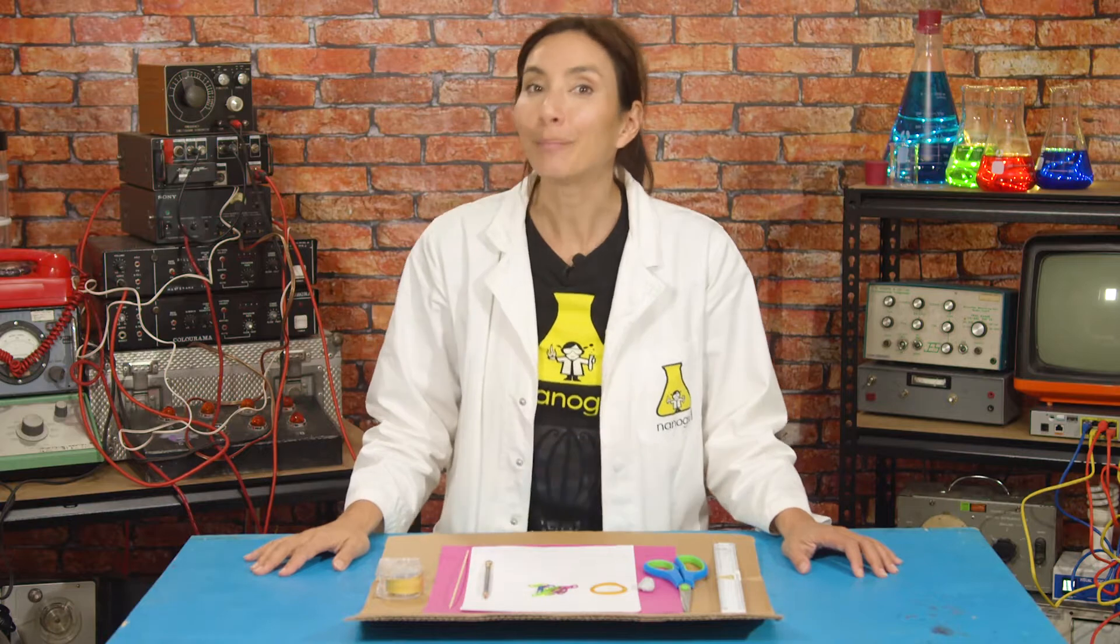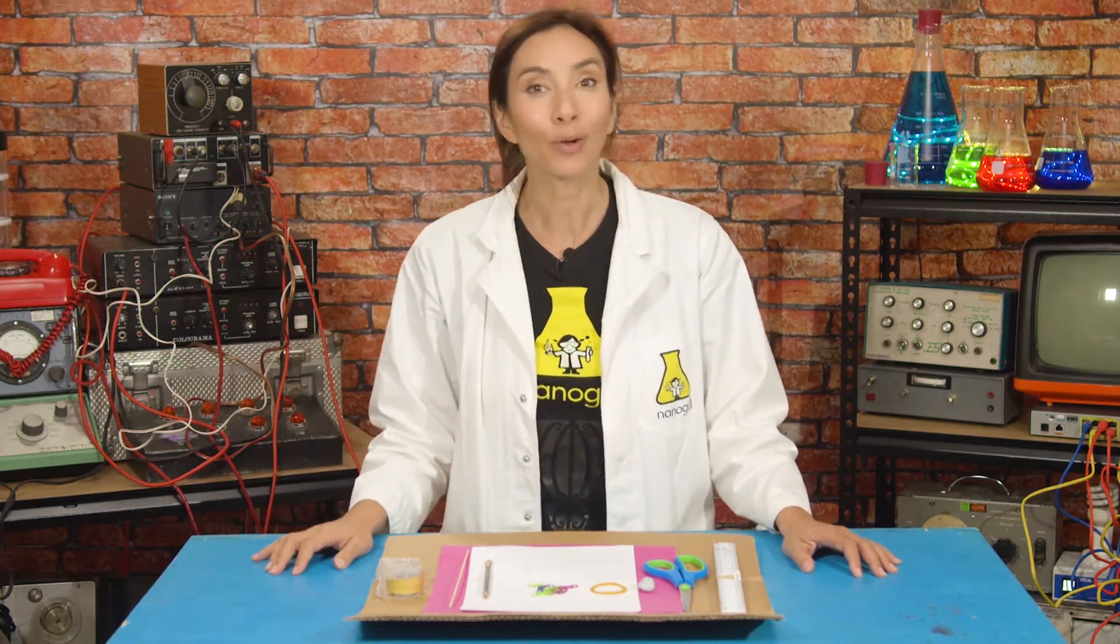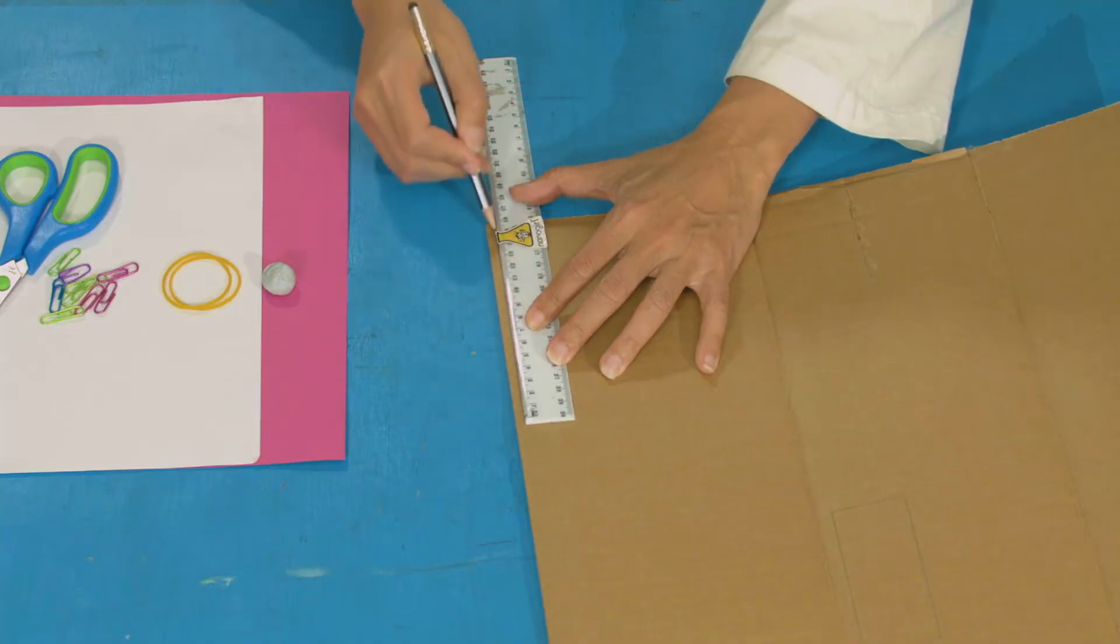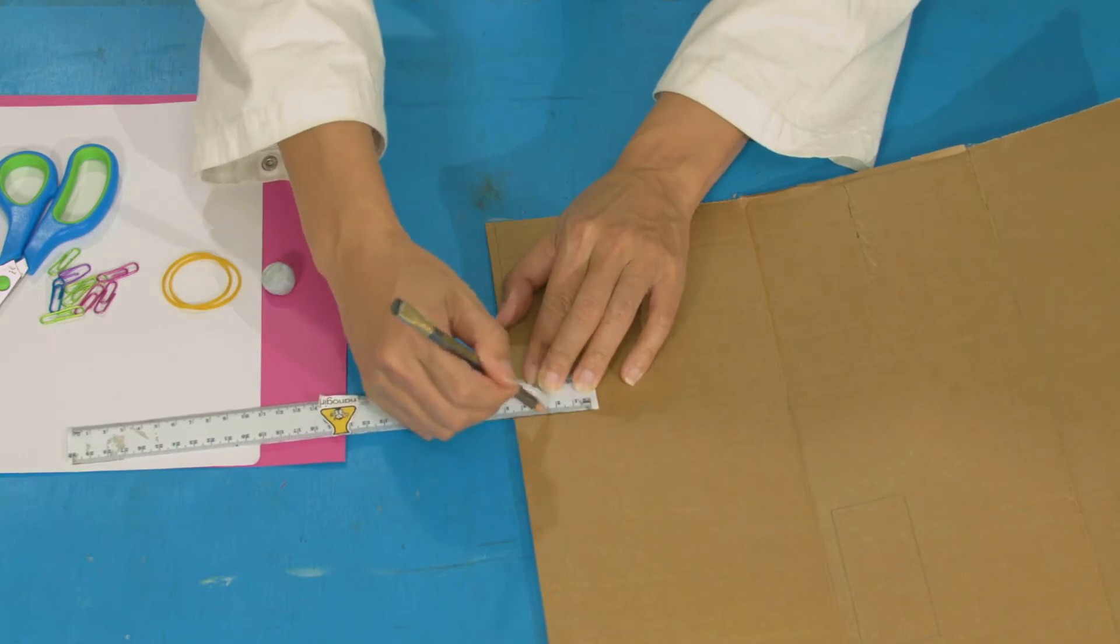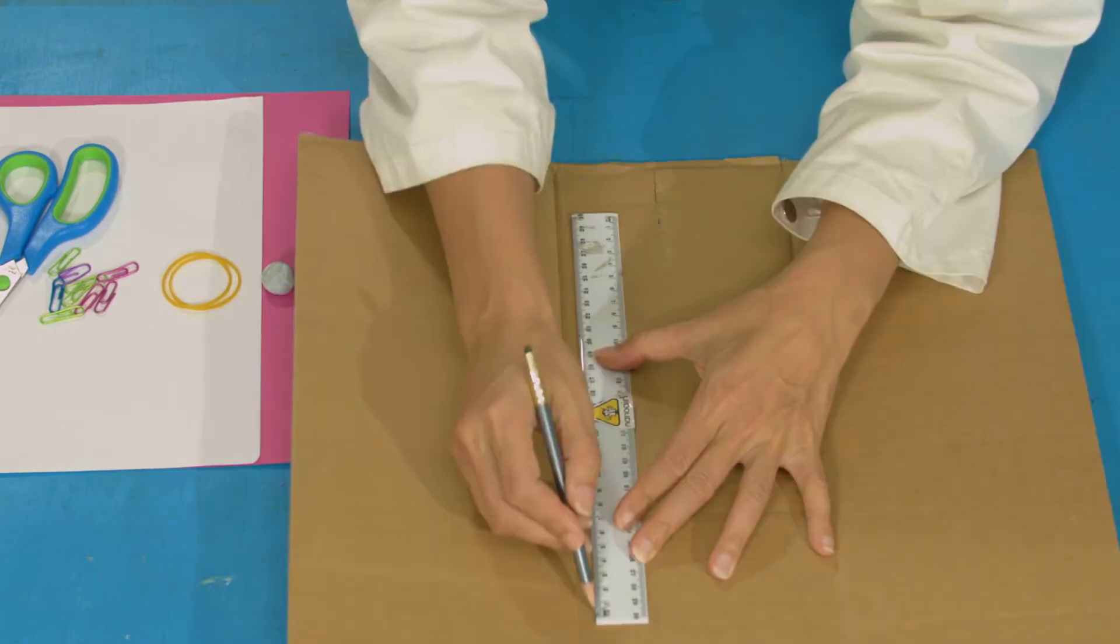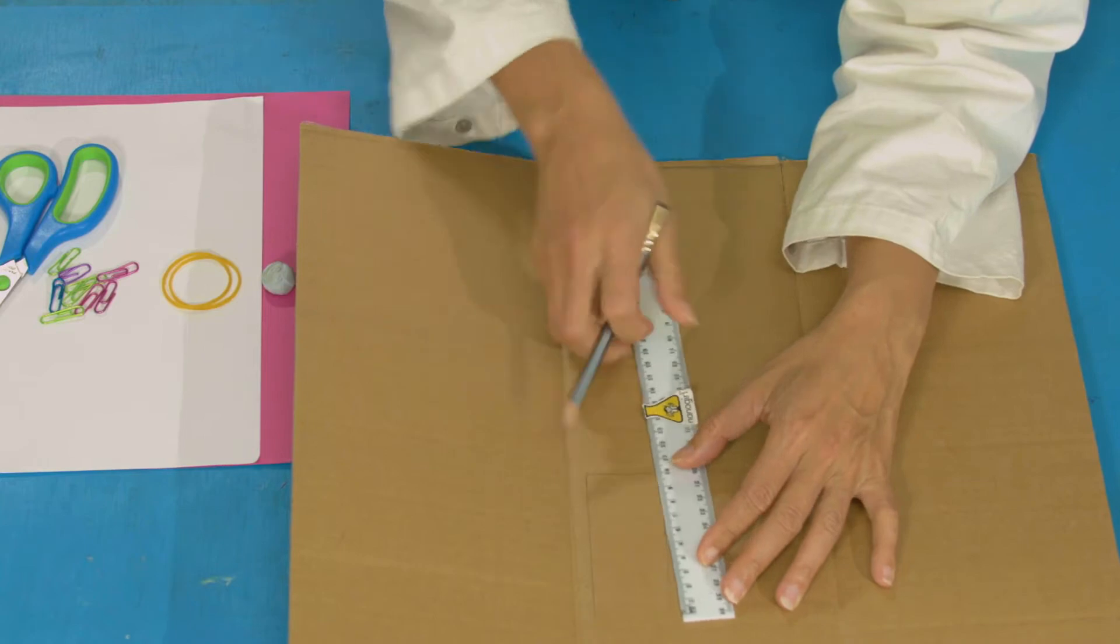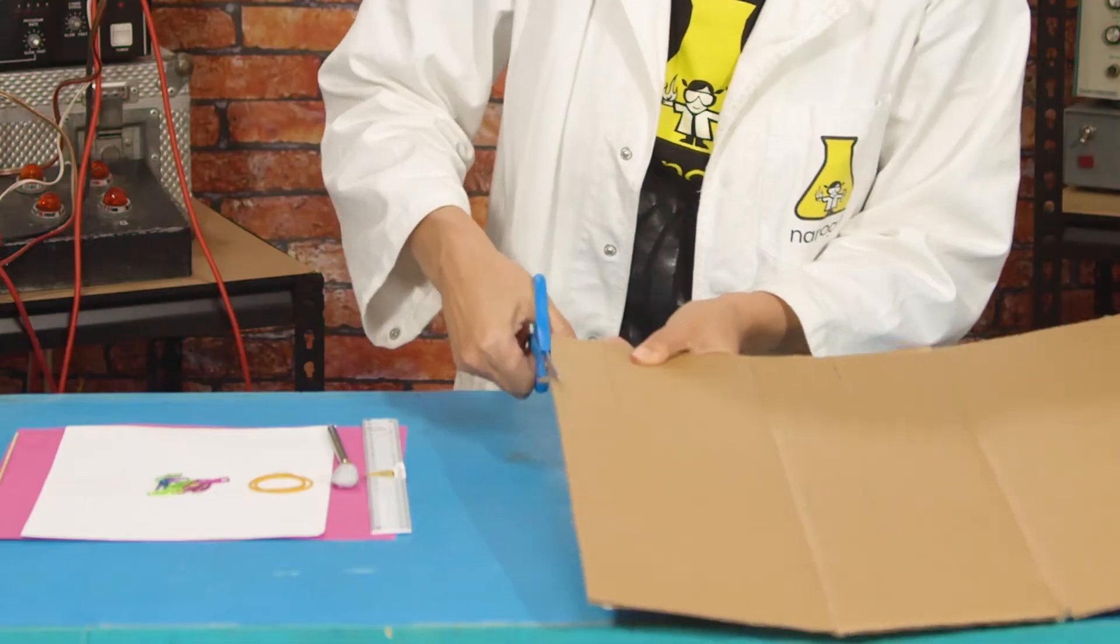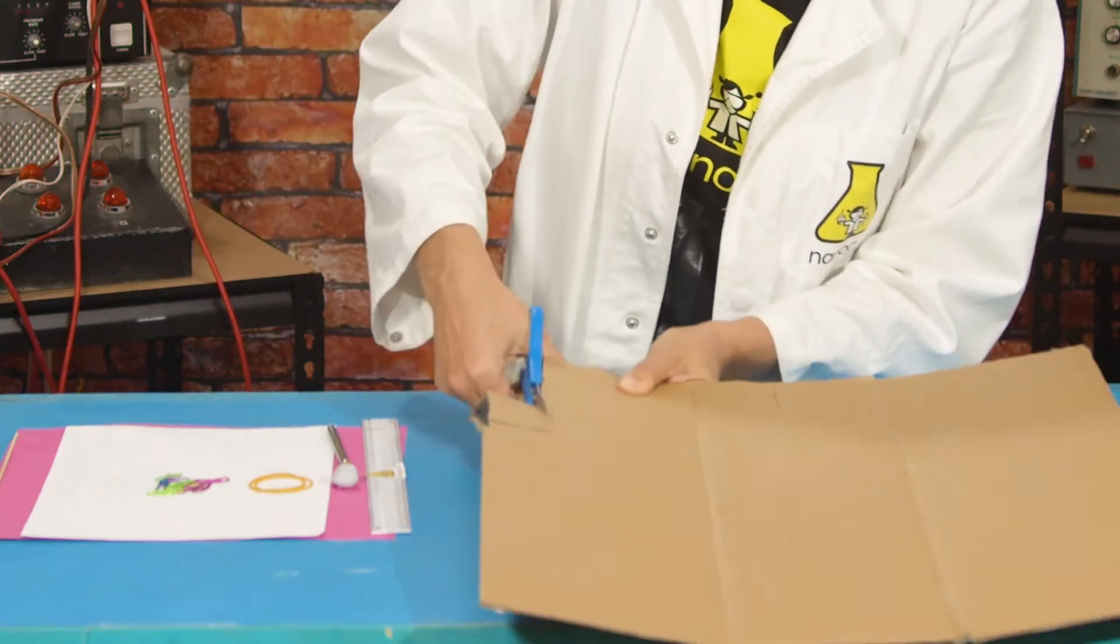Take your thick cardboard and measure and draw six identical cardboard rectangles. They're going to be 16cm long and 4cm wide. And then two more rectangles that are 10cm long and 4cm wide. And then when you've measured them all, you're going to cut them all out.